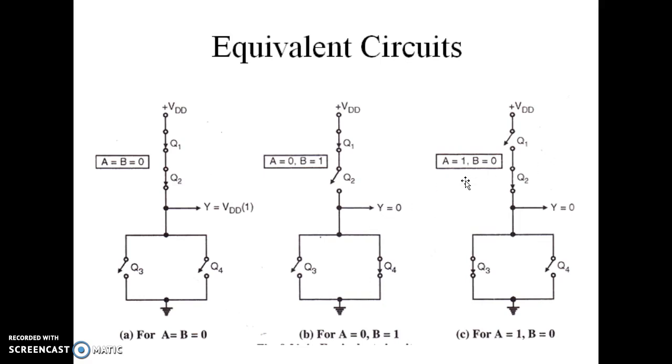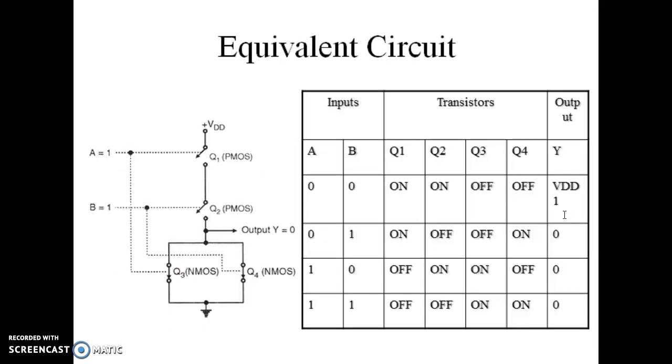Similarly, A equal to 1 and B equal to 0, either of Q1 or Q2 is on and either of Q3 and Q4 is on. So the output condition is the same, Y equal to 0. For both inputs equal to 1, both PMOS are working as open switches, both NMOS are working as closed switches, and the output is equal to 0.